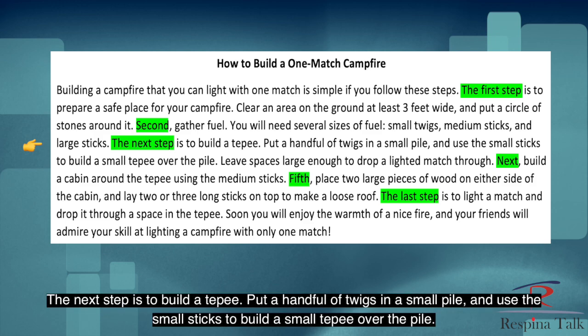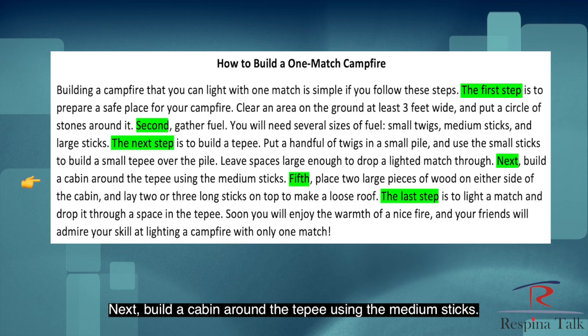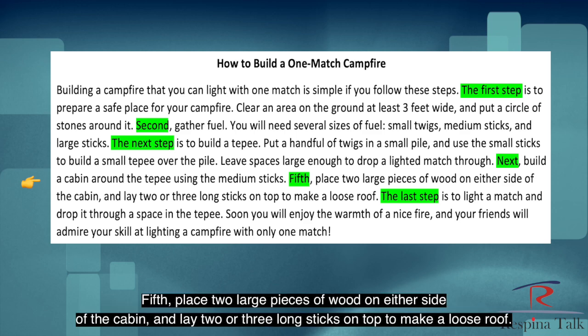The next step is to build a teepee. Put a handful of twigs in a small pile and use the small sticks to build a small teepee over the pile. Leave spaces large enough to drop a lighted match through. Next, build a cabin around the teepee using the medium sticks. Fifth, place two large pieces of wood on either side of the cabin and lay two or three long sticks on top to make a loose roof.